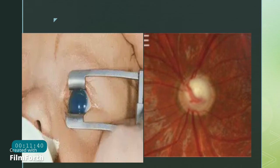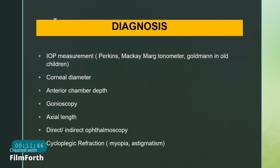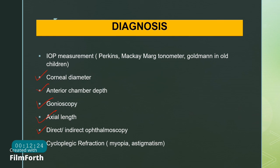Clinically, corneal edema and optic nerve cupping can be observed. For investigations, IOP in children is measured with the Perkins or McKay Marg tonometer; in older children, Goldmann tonometer can be used. Corneal diameter should be measured using the graticule on the slit lamp. Other assessments include anterior chamber depth, gonioscopy, axial length measurement, direct or indirect ophthalmoscopy to evaluate optic nerve cupping, and cycloplegic refraction to rule out myopia and astigmatism.